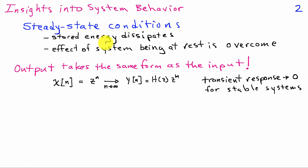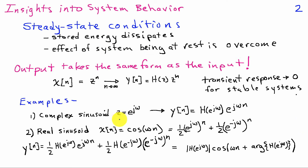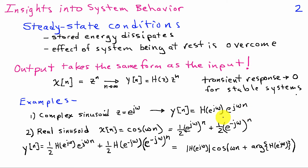Any initial energy in the system has to fade away and no longer have an effect. For example, if the system input is a complex sinusoid — setting z equal to e^(jω) — then z^n is e^(jωn), and the output is h evaluated at e^(jω) times e^(jωn). So a complex sinusoid input yields a complex sinusoid output, with amplitude and phase scaled by h(e^(jω)).